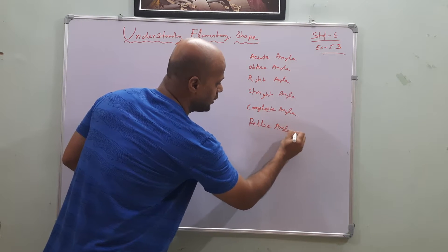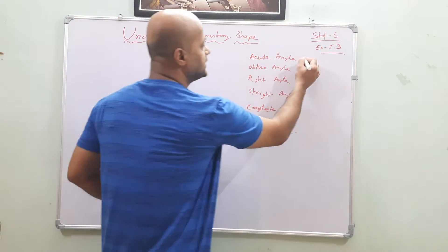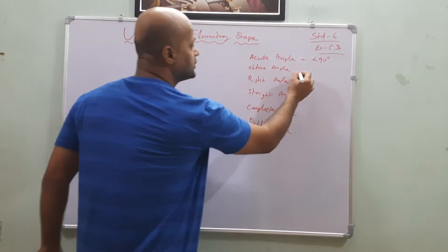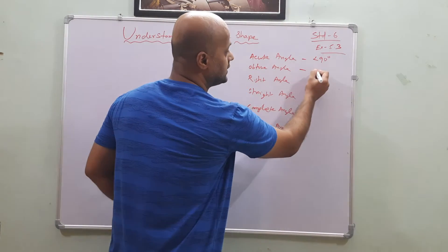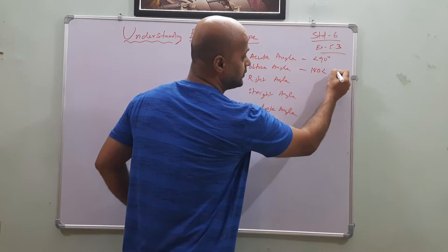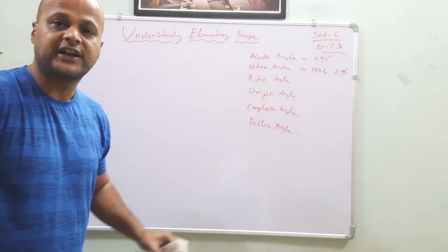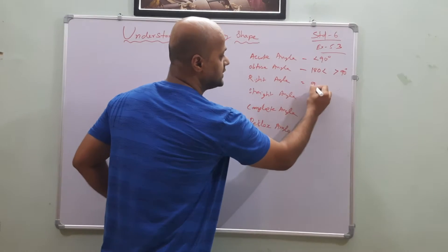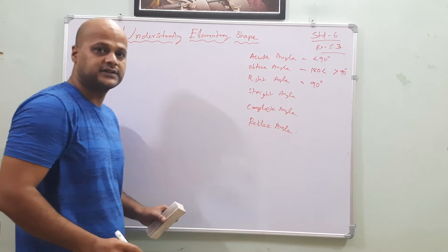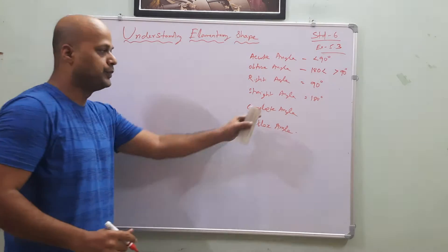We will discuss the reflex angle as well. So first: acute angle is less than 90 degrees — we studied it in the previous chapter. Obtuse angle is less than 180 degrees but greater than 90 degrees. And right angle is equal to 90 degrees.